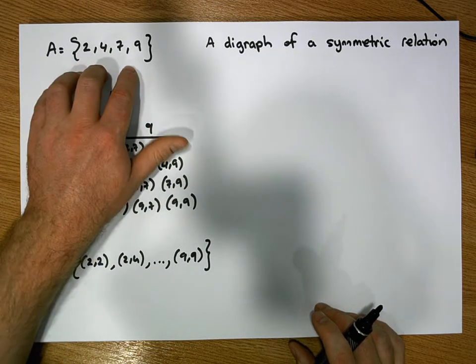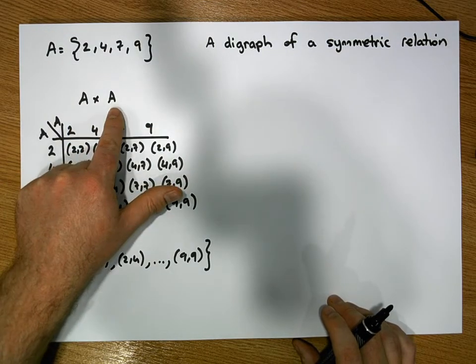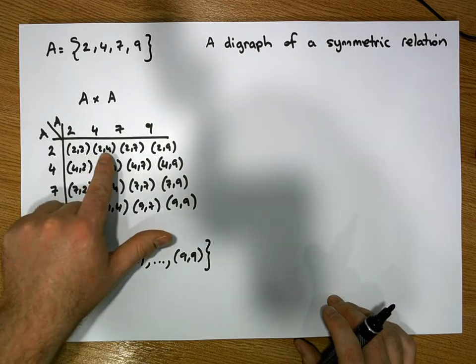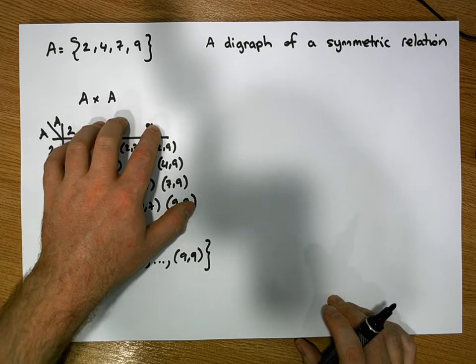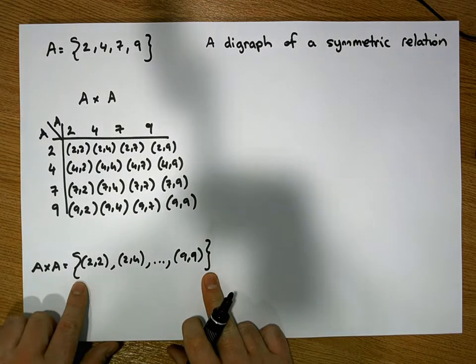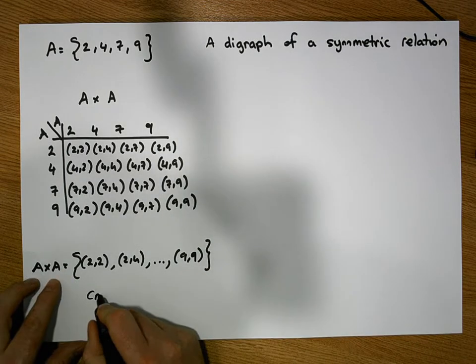But more importantly, the relation is a subset of the cross product of A with itself. This construction here allowed us to construct all of the ordered pairs. We took all of these ordered pairs, we placed them inside a set. And this set of ordered pairs is what's known as the cross product.